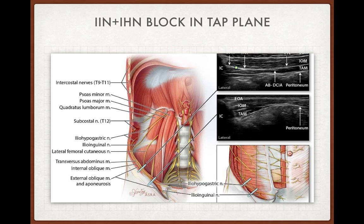For ilioinguinal and iliohypogastric nerve block in the TAP plane, go four to five centimeters cranial and four to five centimeters posterior to the anterior superior iliac spine — you will find both nerves in the TAP plane, and a single injection of 15 to 20 ml of local anesthetic will block both nerves in most patients. This provides excellent analgesia for LSCS and hernia patients. For LSCS we use bilateral blocks with roughly 20 ml of ropivacaine on each side, providing 10 to 18 hours of analgesia even with the halo technique.